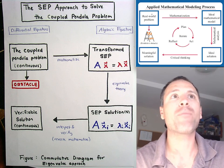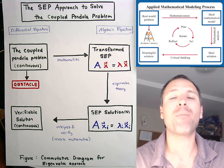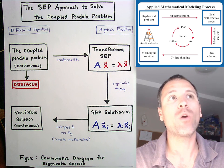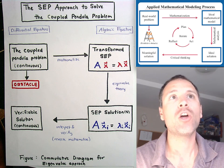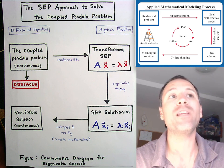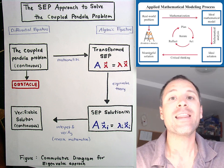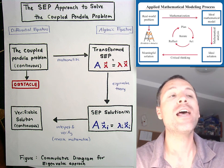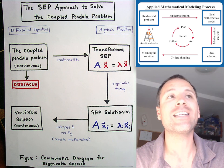When we first started this class, I promised that we were going to see examples of applied math modeling in action. And we had this diagram where we went from a real-world problem to an ideal mathematical model to an ideal solution to a meaningful real-world solution. This coupled pendulum problem relying on standard eigenvalue problems is an example of this.